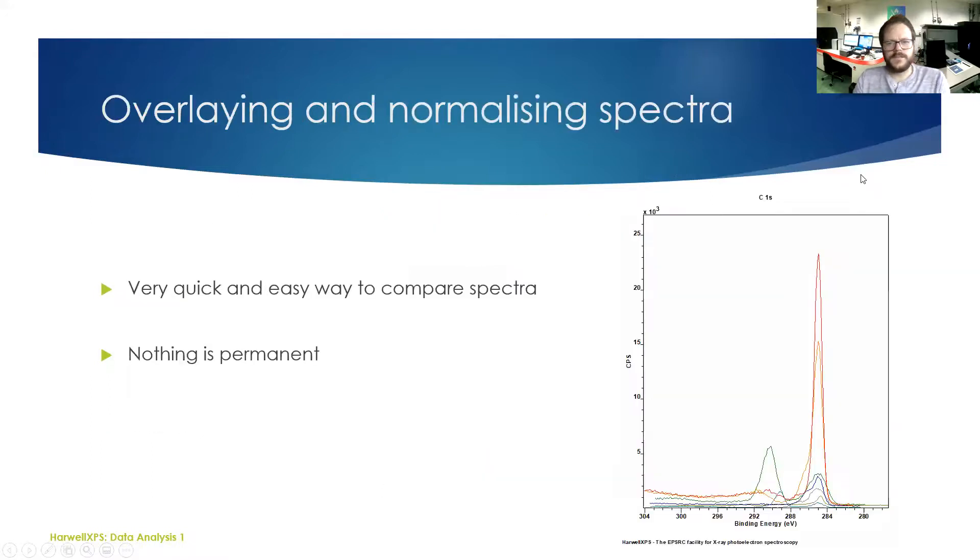We're just going to talk about some overlaying and normalizing you can do with Casa or XPS. It's a really good way to visualize differences in your spectra. For example, here we have a bunch of carbons overlaid and we can see that some have higher energy peaks, some are single peaks, some have multiple peaks. None of these are permanent changes. You can toggle on and off overlaying and normalizing. It's just a really nice way to help you visualize.